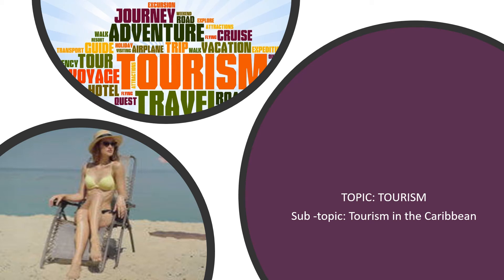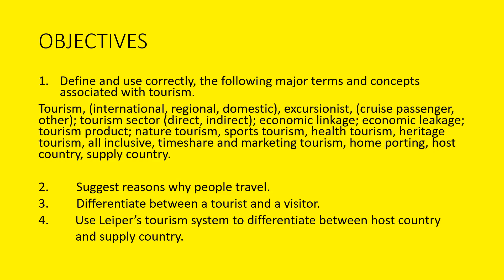Welcome students to another quick video. Today we're going to look at what tourism is. Here are our three objectives: we're going to look at some of the reasons why people travel, we're going to differentiate between a tourist and a visitor, and we're going to use Leiper's tourism system to differentiate between host country and supply country.